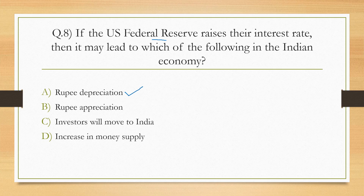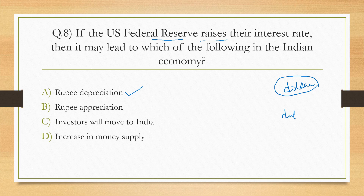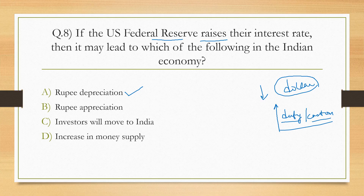When the US Federal Reserve interest rate is very high, the dollar becomes strong. And when the dollar is strong, the rupee becomes weak — that is rupee depreciation. This affects import costs, which become higher. On the export side, when the rupee is weak, our export revenue in rupee terms is higher, but the import cost increases significantly.